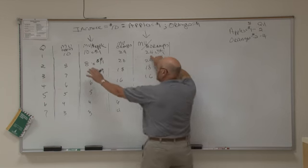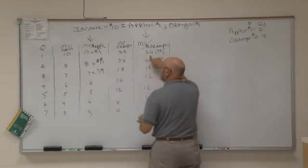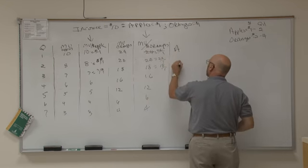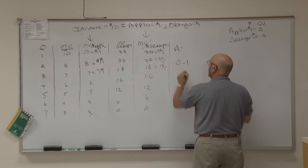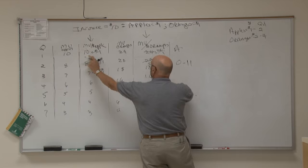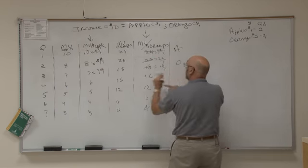So therefore, what do I want? Do I want the first unit of oranges, the first unit of apple? Well, oranges give me 24. So therefore, I'll buy the first unit of oranges. The next unit of orange. 18 versus 10, the next unit of oranges.